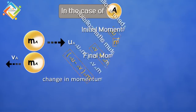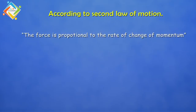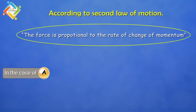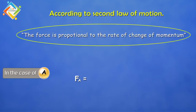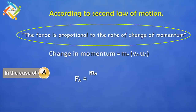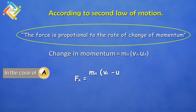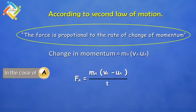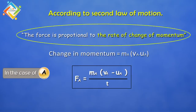According to the second law of motion, force is proportional to the rate of change of momentum. So in the case of ball A, the force exerted fA equals the rate of change of momentum. As we calculated, that is mA(vA − uA) divided by t, because we are considering the rate of change of momentum. Now let's move on to the case of ball B.